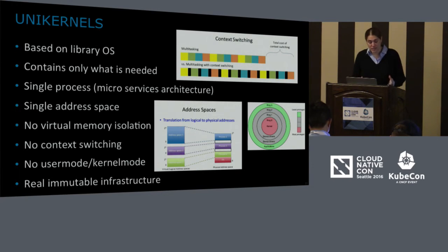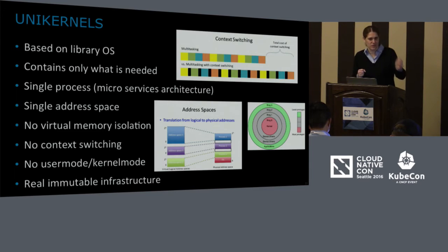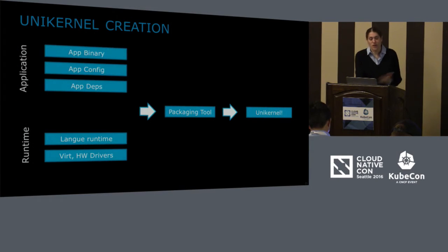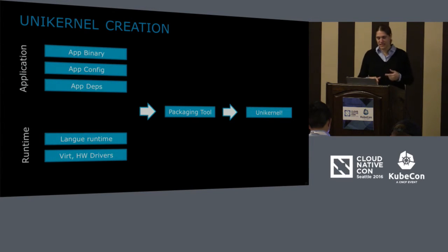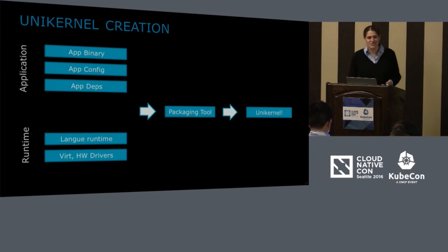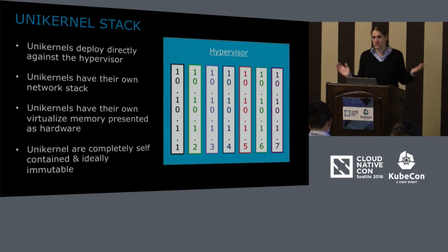The beauty of it is that this is truly immutable infrastructure. You cannot SSH into a unikernel — we don't want to put something you don't need there, and SSH is very vulnerable. If you need to upgrade, you build a new one and run it. Real, genuine immutable infrastructure. You take your application, your config, dependencies, language runtime, and drivers, put them all into a tool, and create a unikernel. It can run as a bootable image on bare metal, but we'll use a hypervisor — it just makes sense.